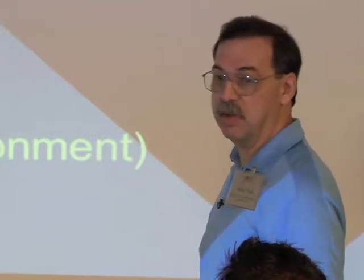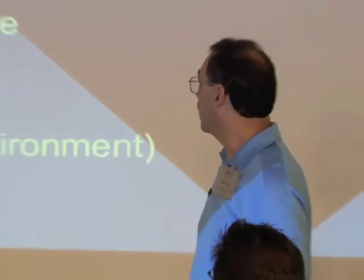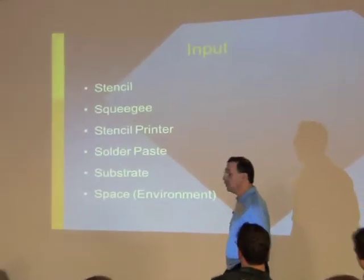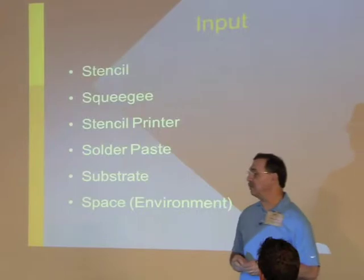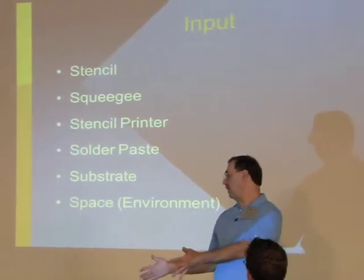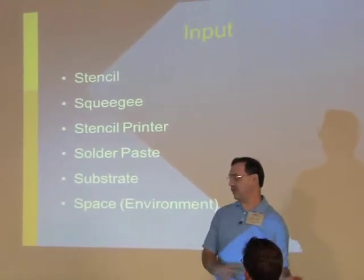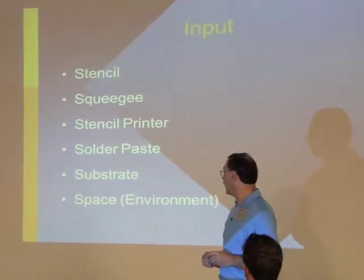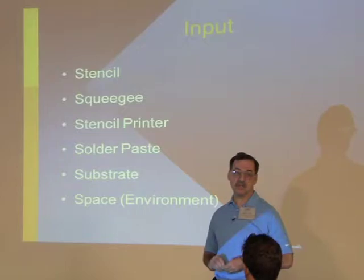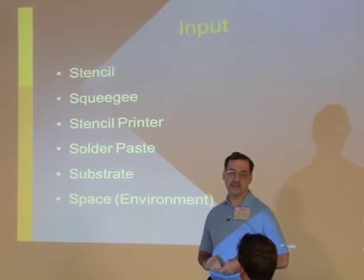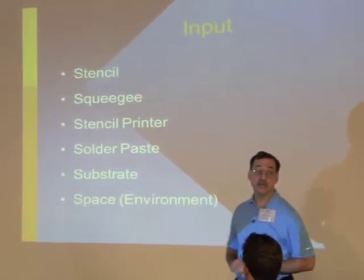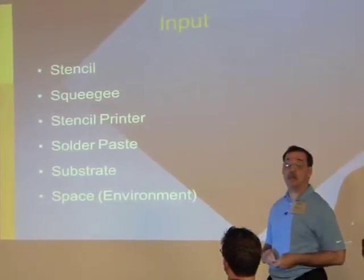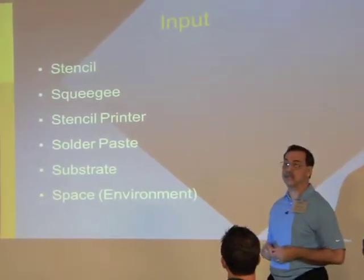Squeegee — everyone uses metal blades now. Your stencil printer is an input. Do you have control of your stencil printer, company standards — your snap-off, your squeegee speed, and all of that? Your solder paste — can your customer dictate your solder paste, or do you get a choice yourself? And the substrate — how many people control where you get your substrate?